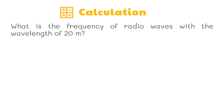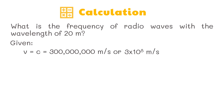Let's try this sample problem. Assuming that the waves propagate in a vacuum, what is the frequency of radio waves with a wavelength of 20 meters? The given values are: wave speed equal to the speed of light, which is 3 times 10 raised to the 8th power meters per second — a constant value — and wavelength equal to 20 meters, or 2 times 10 raised to the 1st power meters. We are solving for frequency.